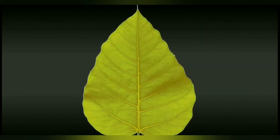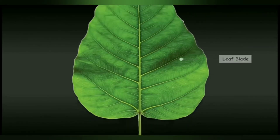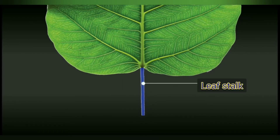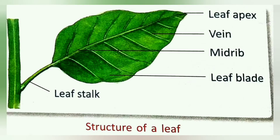The flat and green part of the leaf is called the leaf blade. The part that attaches the leaf blade to the stem of the plant is called the leaf stalk. The tip of the leaf is called the leaf apex.